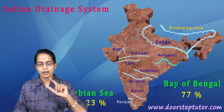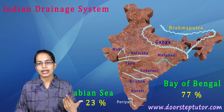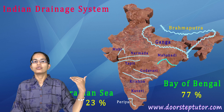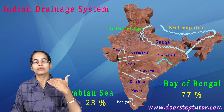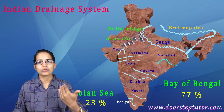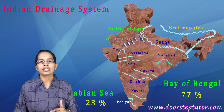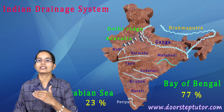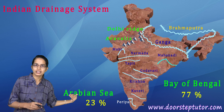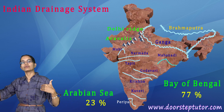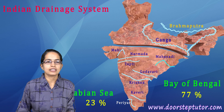These drainage basins are demarcated by hill ranges — it could be the Delhi hills, the Aravallis, or the Sahyadris. All of these hilly ranges divide the rivers flowing into the Arabian Sea from those flowing into the Bay of Bengal.